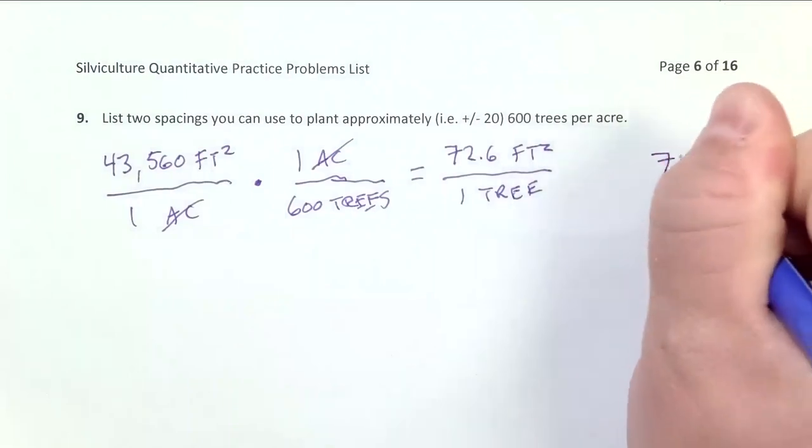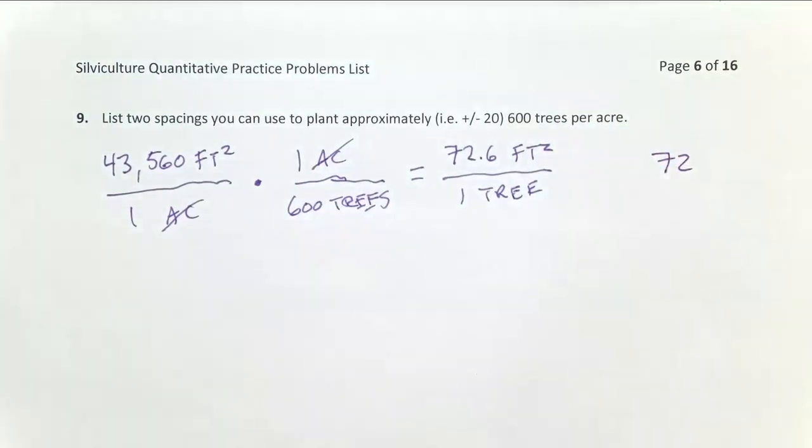So I'm going to use 72 square feet per tree. And now I do a prime factor tree where I figure out what series of prime numbers I can multiply together that will equal 72. So those are going to be numbers that can only be arrived at by multiplying one by themselves, no other combination.